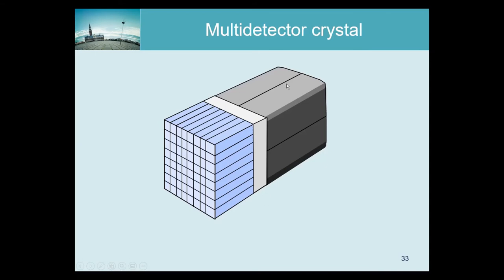The entire block collaborates to find the scintillation location. If one photon hits the block, the whole block is busy. If a second photon enters the same block simultaneously, that block suffers pile-up and cannot identify either event correctly — but all other blocks remain active, so the system dead time is much lower than with a single large crystal.